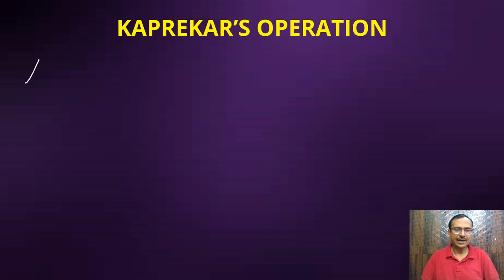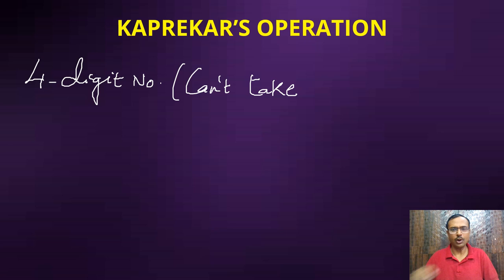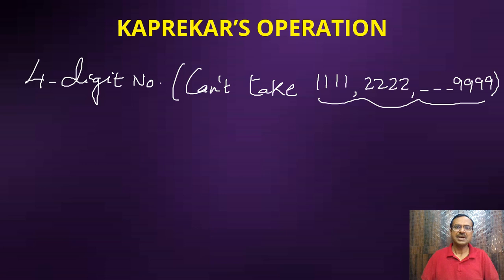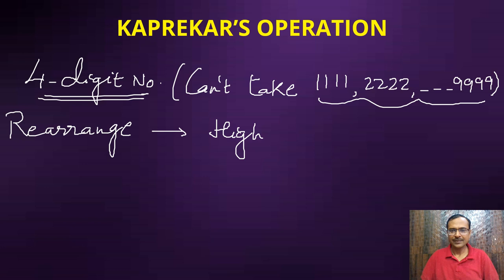Kaprekar told us that if we take any four-digit number, there is a condition: no digits should repeat. You cannot take all four digits as the same. You can take two digits as the same but not all four. Can't take 1111 or 2222 - for these numbers the operation is not valid. Apart from these nine numbers, for all numbers the operation is valid. So if you take a four-digit number and then rearrange the digits to get the highest number and then again rearrange to get the lowest number.